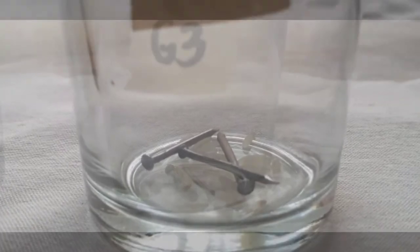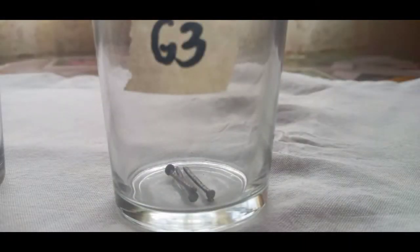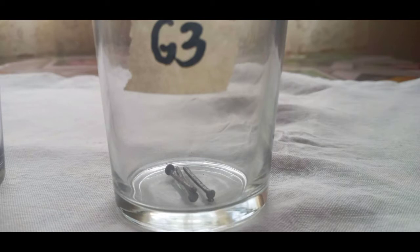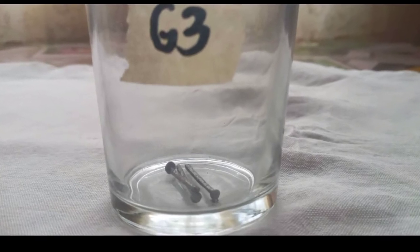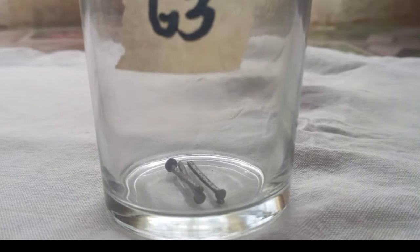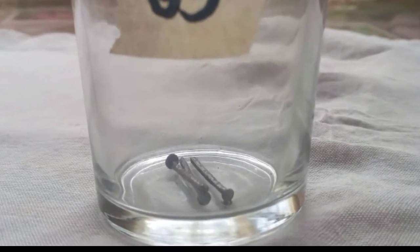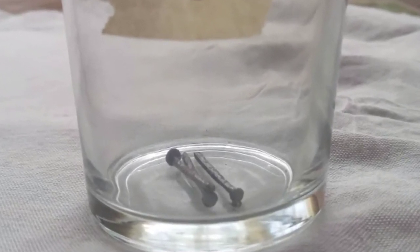Glass 3: The nails do have rust, but not that much. It looks like patches of rust that is evident on the nails. The grey color of nails were still visible. And this setup, no liquid added.